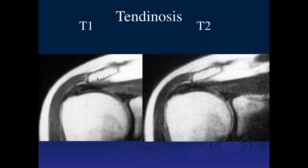When you get tendinosis, you start getting increased signal intensity on the short TE images. In more severe tendinosis, we can also see abnormal signal intensity on the T2-weighted image. A low level of tendinosis would be black on T2; moderate tendinosis shows increased signal intensity on both sequences.